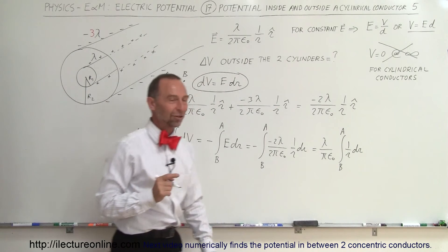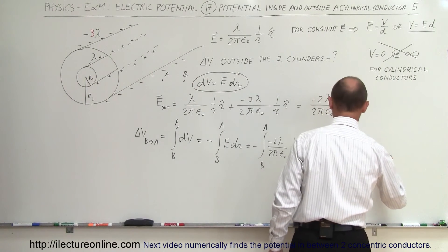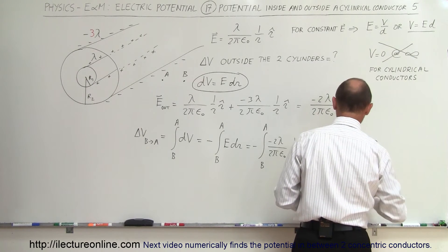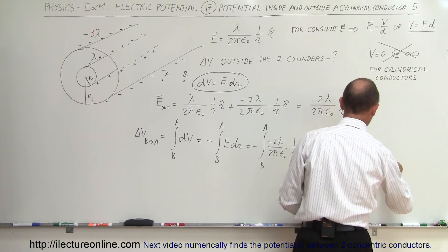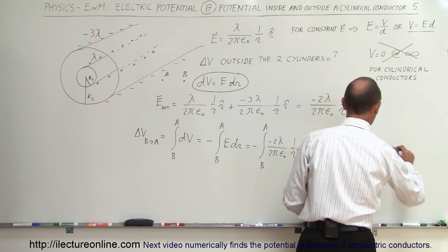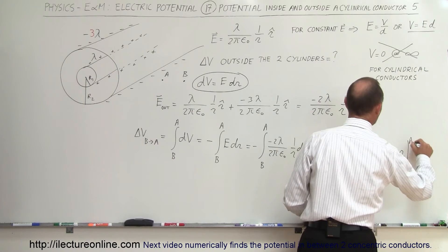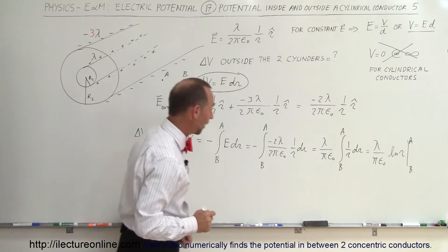Which, of course, who knows the natural log of r? So this is equal to λ divided by... Oops. λ divided by πε₀ times the natural log of r evaluated from B to A. All right, let's go ahead and plug those values in.